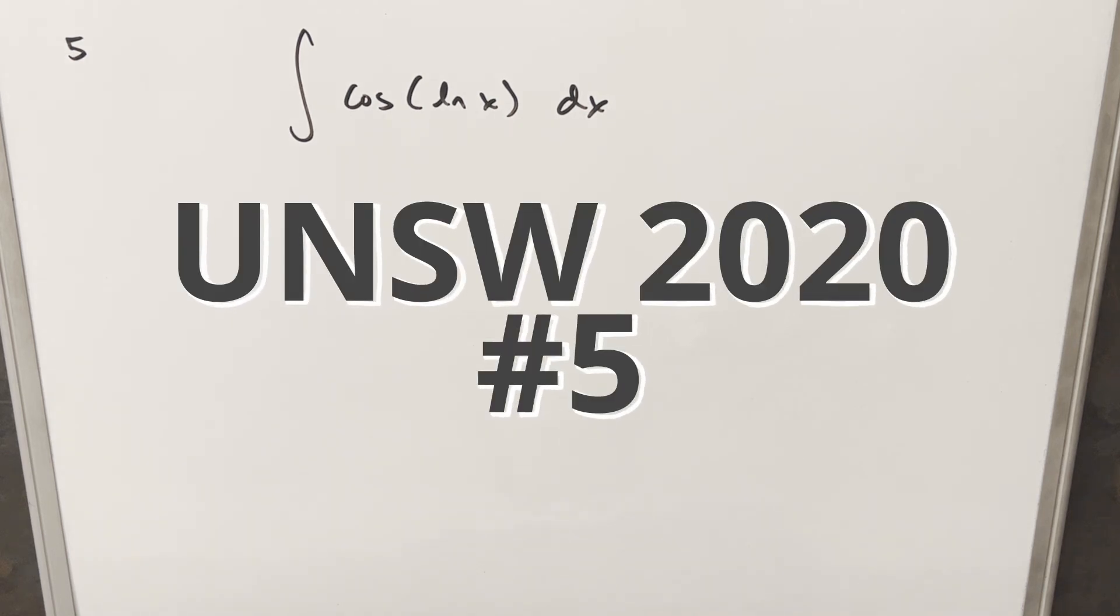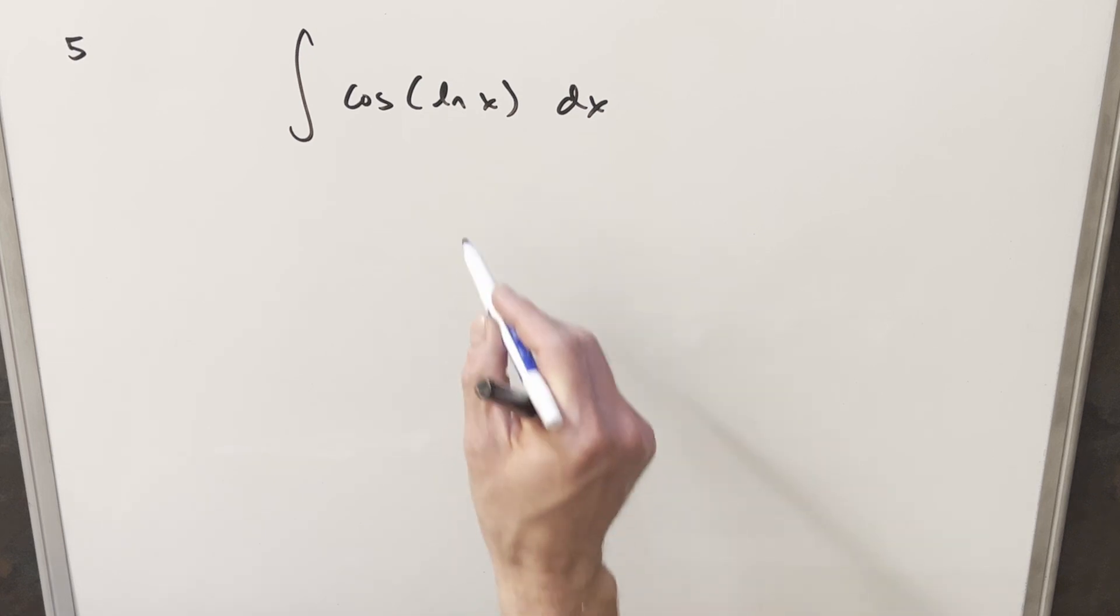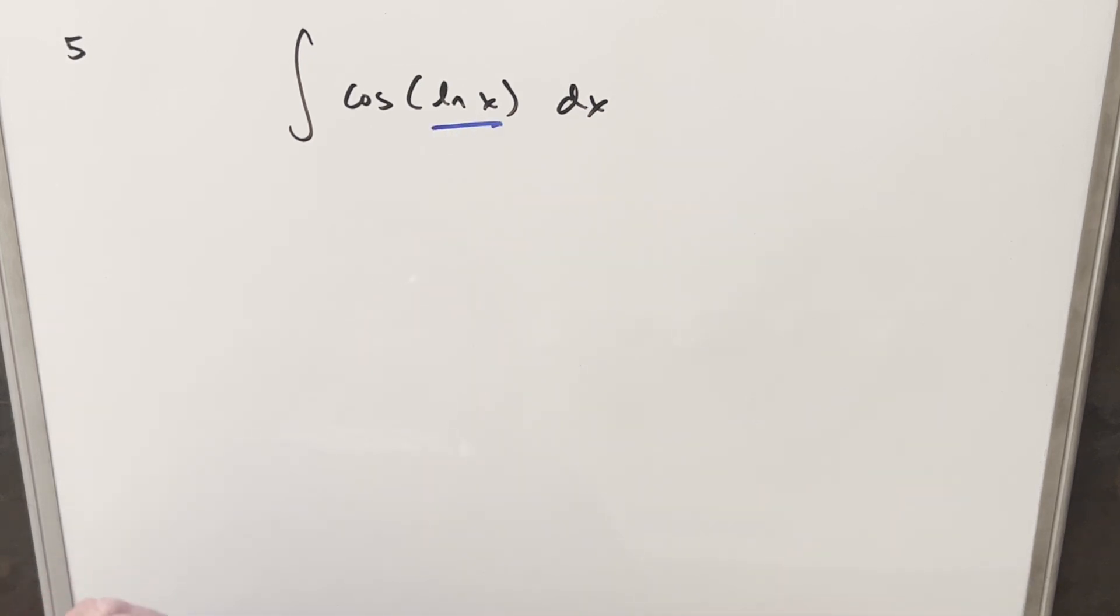We have here another integral from the UNSW integration B 2020, this one's problem 5. We have the integral of cosine ln x dx. So of course the trouble is what do we do when we have ln x as the input for our cosine function?